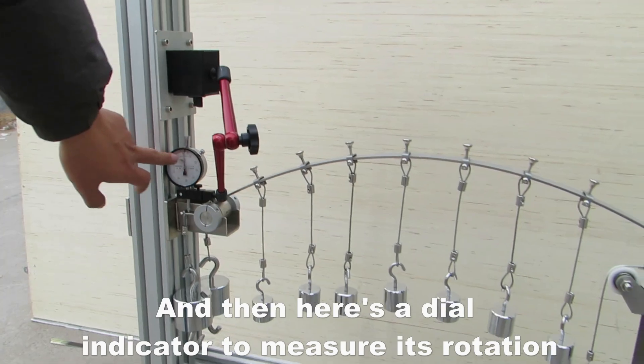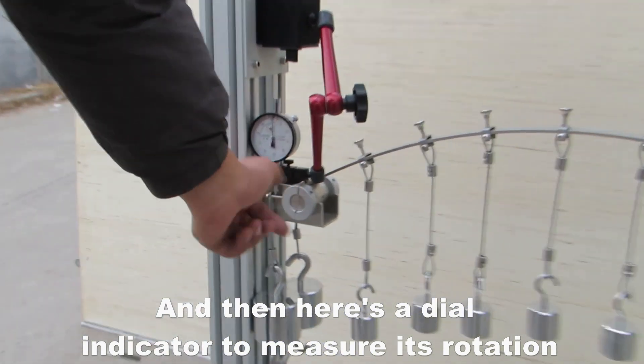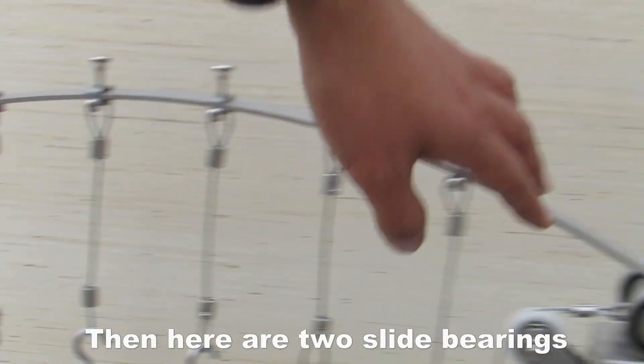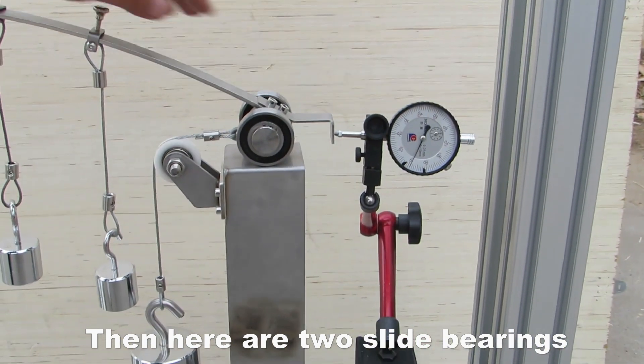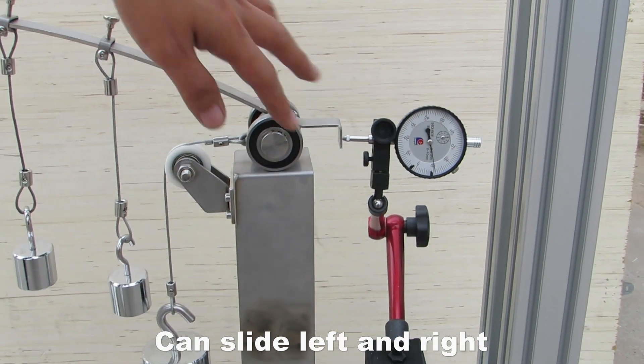And then here's a dial indicator to measure its rotation. Then here are two slide bearings that can slide left and right.